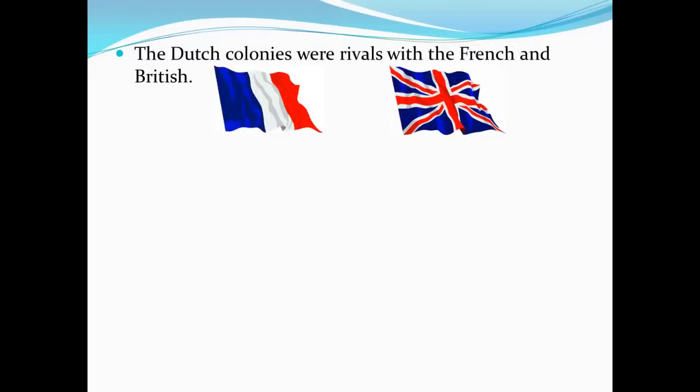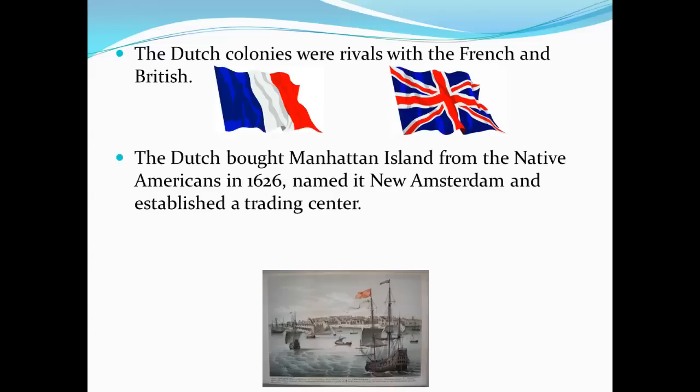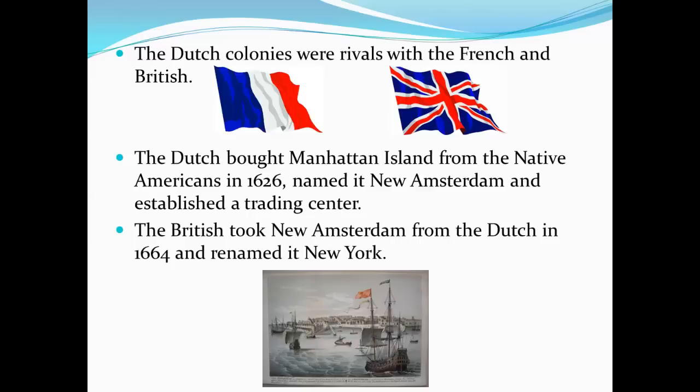The Dutch colonies from the Netherlands were rivals with both the French and British colonies. The Dutch purchased Manhattan Island in 1626 from the Native Americans and established a trading center. They named their town New Amsterdam. The Dutch controlled the city until 1664, when the British took it from them by force and renamed the city New York.